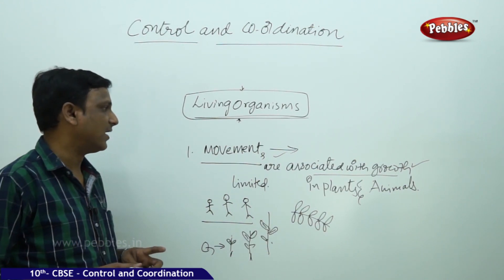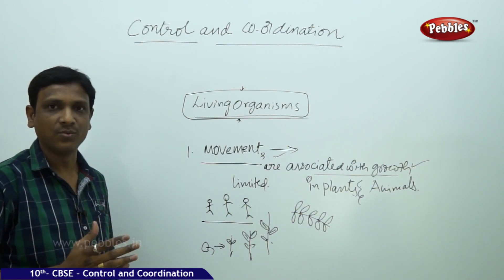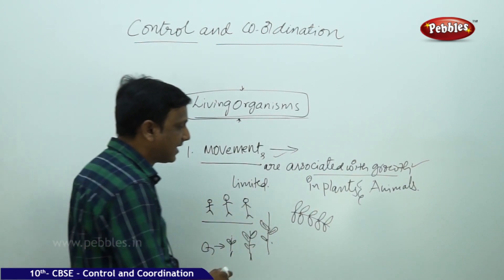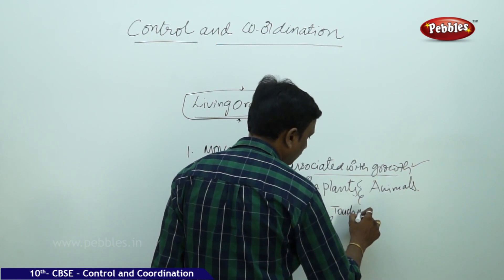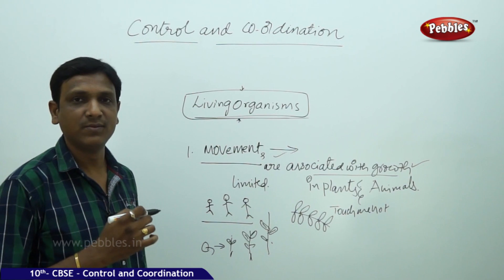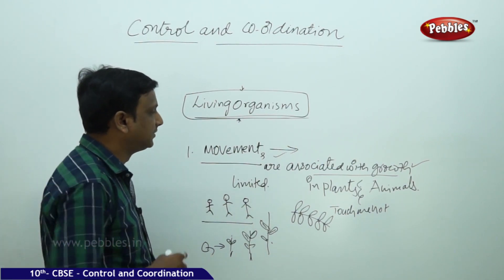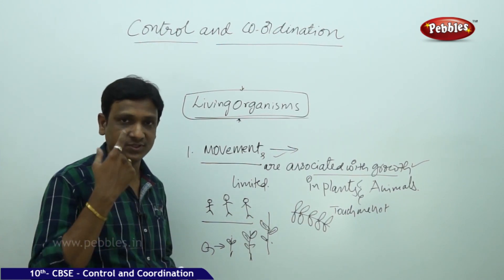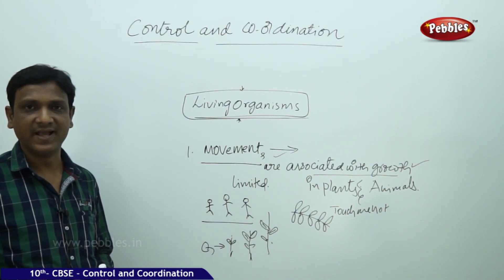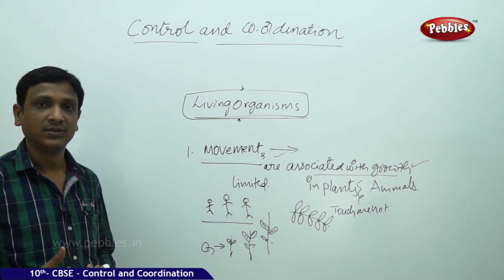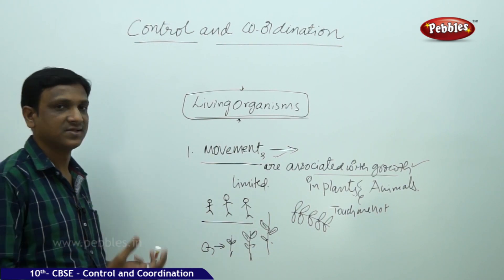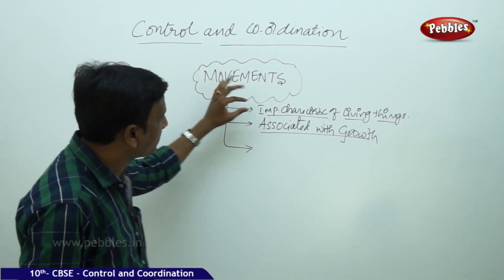In most cases in plants, movements are associated with growth, but not always. We have seen the touch-me-not example where there is no growth linked with movement. So movements are not always associated with growth. Then why and how are movements produced in living organisms? This is what we are going to discuss in this chapter, Control and Coordination. If it is a plant or an animal, movements are there — but movements are caused because of what? Are all these movements useful? Do they have any purpose?